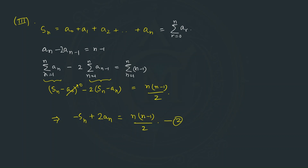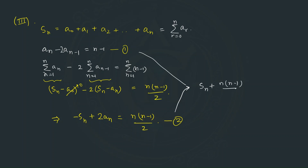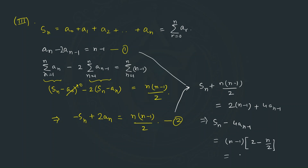We also have Relation 1: aₙ − 2aₙ₋₁ = n − 1, so aₙ = 2aₙ₋₁ + (n−1). Substituting into Relation 2 to eliminate aₙ: Sₙ = 2(2aₙ₋₁ + (n−1)) − n(n−1)/2 = 4aₙ₋₁ + 2(n−1) − n(n−1)/2. Rearranging: Sₙ − 4aₙ₋₁ = (n−1)(4−n)/2.